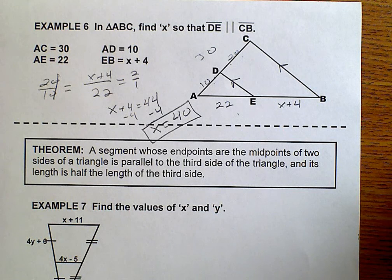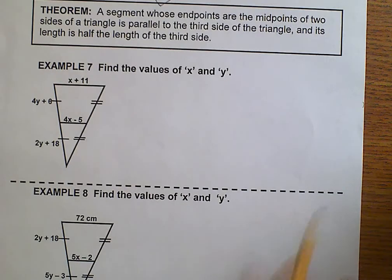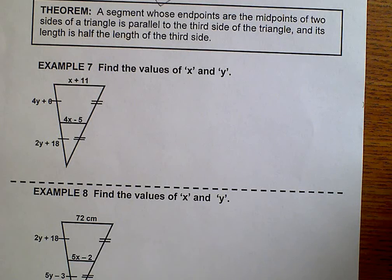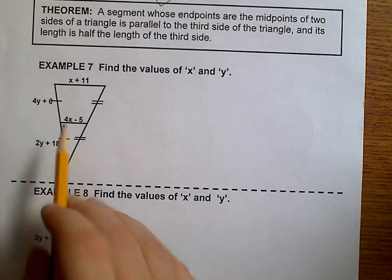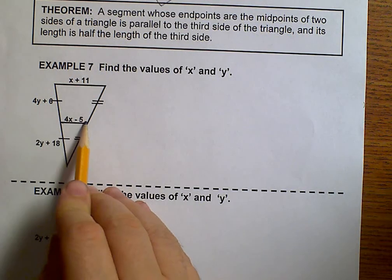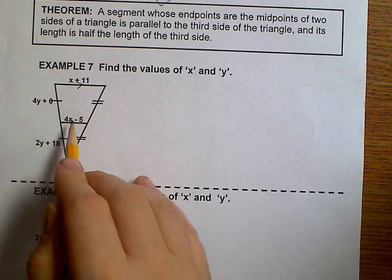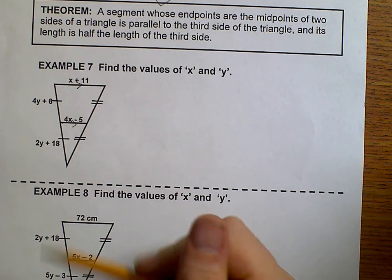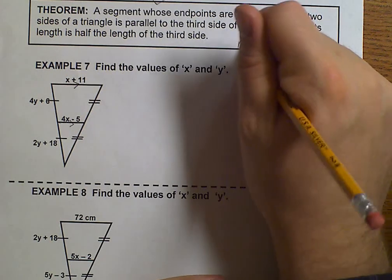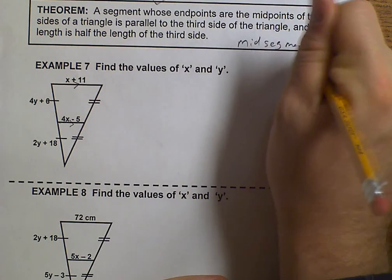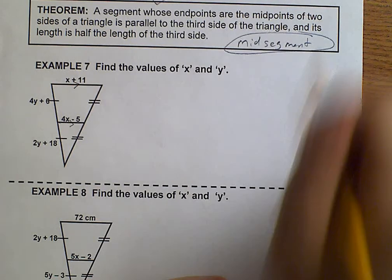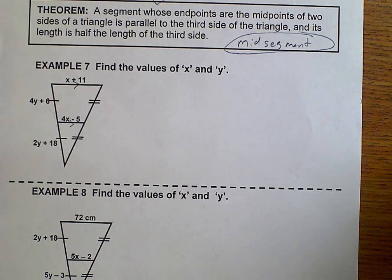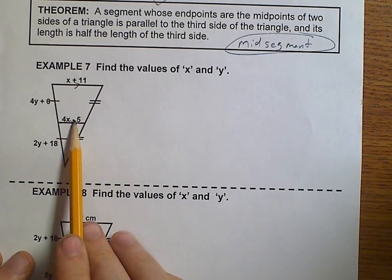All right, let's take a look at our third theorem for the day. Again, a segment whose endpoints are the midpoints of two sides of a triangle is parallel to the third side of the triangle, and its length is half the length of the third side. What that says is if I have a mid-segment, then every mid-segment will be parallel. So if I have a mid-segment, then I have proportional sides.